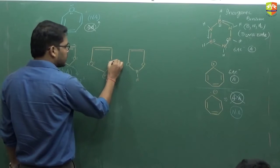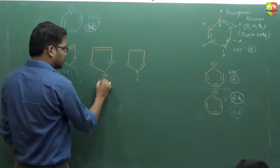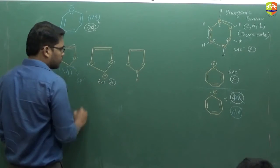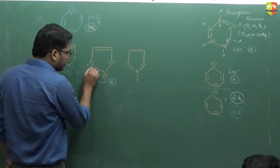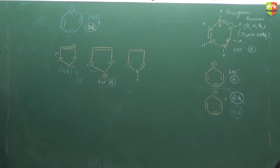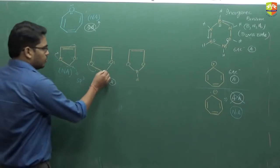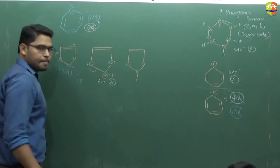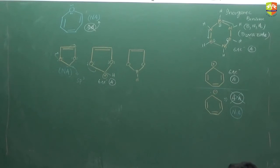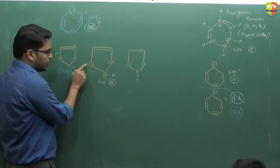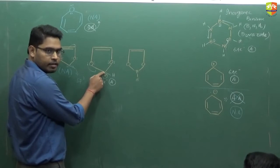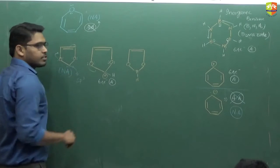Because of this positive charge, the entire thing becomes in conjugation — it has 6 pi electrons, aromatic. The positive charge means it is SP2, and it is in conjugation: lone pair, sigma, vacant p orbital. Because it has only one hydrogen — 1, 2, 3 — so plus charge means SP2, and this becomes in conjugation. Lone pair, sigma, vacant p: so this is in conjugation.